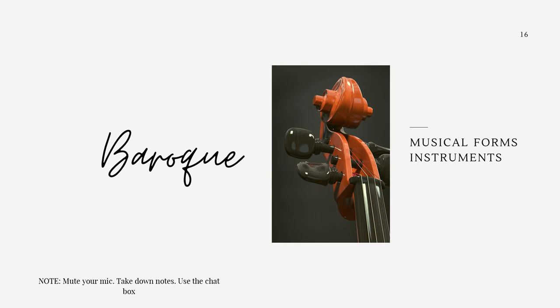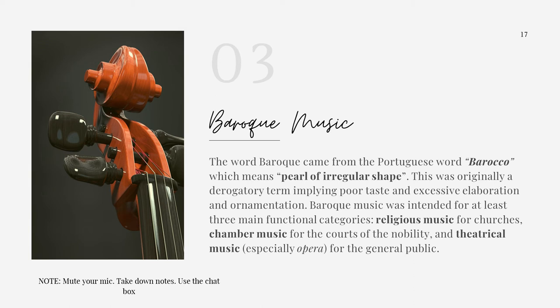Lastly let's discuss the music from the baroque period, particularly the musical forms and instruments. The word baroque came from the Portuguese word 'baroco' which means 'pearl of irregular shape.' This was originally a derogatory term implying poor taste and excessive elaboration and ornamentation. Baroque music was intended for at least three main functional categories: religious music for the churches, chamber music for the courts of the nobility, and theatrical music — especially opera — for the general public.